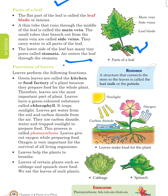Functions of the leaf: leaves perform the following functions. Green leaves are called the kitchen or food factory of a plant because they prepare food for the whole plant. Therefore, leaves are the most important part of a plant. Leaves have a green colored substance called chlorophyll, which traps sunlight. Leaves get water from the soil and carbon dioxide from the air. They use carbon dioxide, water and trapped sunlight to prepare food. This process is called photosynthesis. Leaves give out oxygen while preparing food. Oxygen is very important for the survival of living organisms.